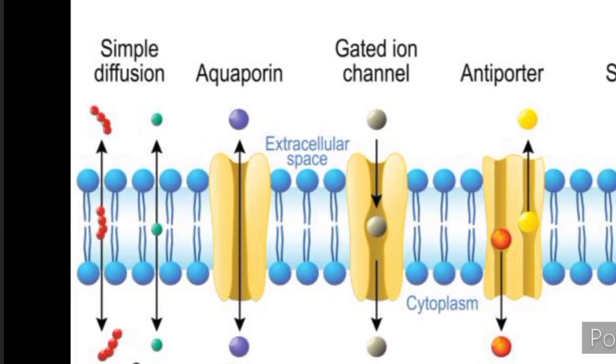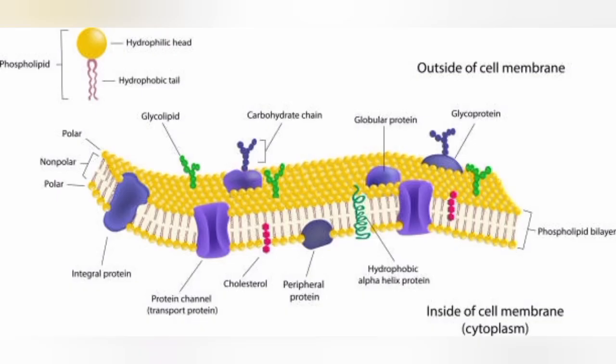Integral proteins can serve as channels or transporters for specific substances, while peripheral proteins often function in cell signaling, anchoring the membrane, or maintaining cell shape.